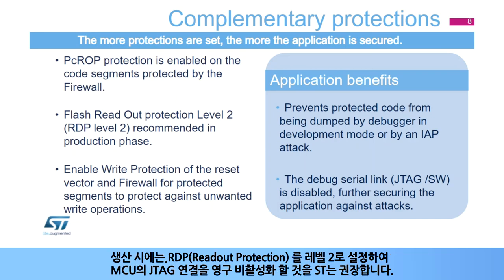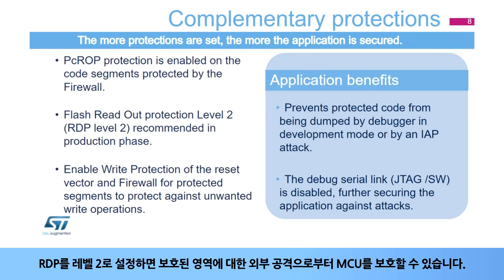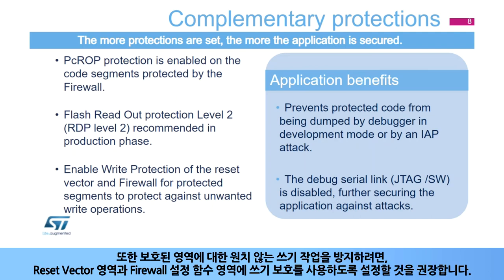In production, ST recommends setting the STM32 readout protection or RDP to level 2, which disables the JTAG link to the MCU, securing it against any external attacks to the protected segments. ST also recommends enabling write protection on the reset vector and the firewall configuration to prevent any unwanted write operations to the protected areas.